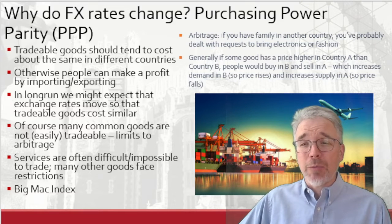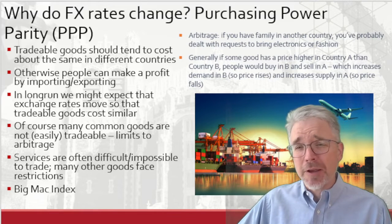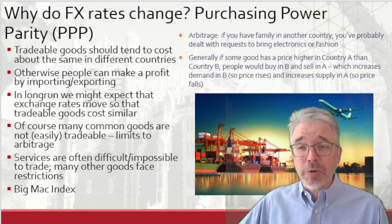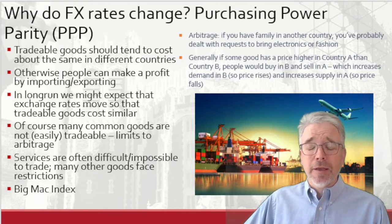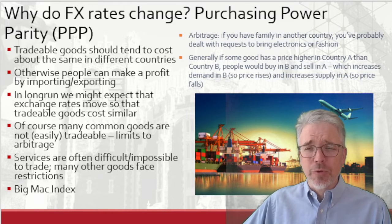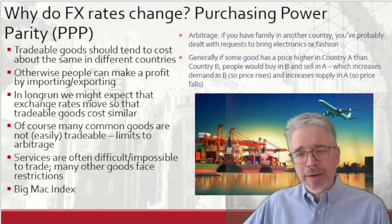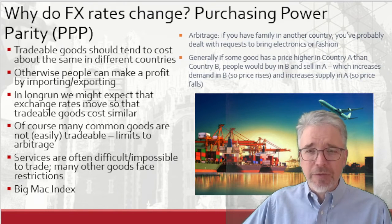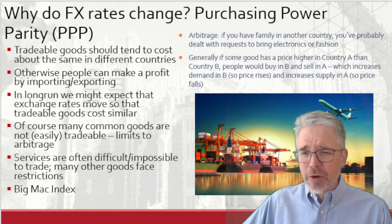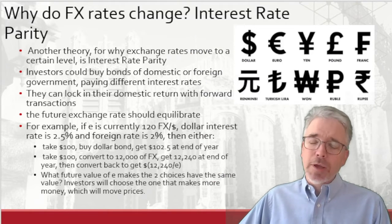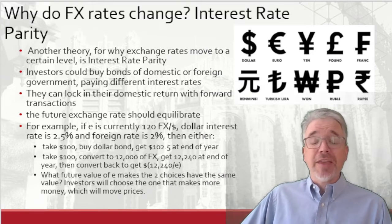Generally, if some good has a price that's high in country A and low in country B, then people are going to buy low and sell high. That will tend to increase demand in country B, raising the price there, and increase supply in country A, lowering the price there. So there's going to tend to be some sort of arbitrage — with a lot of caveats. This theory may not be airtight, so we have another theory.